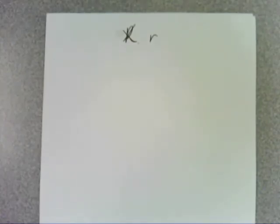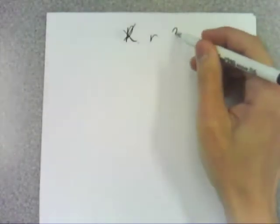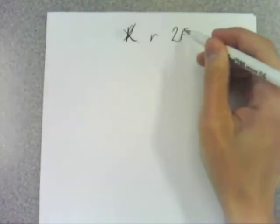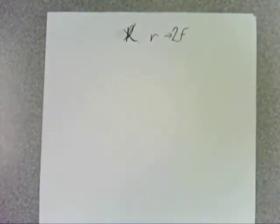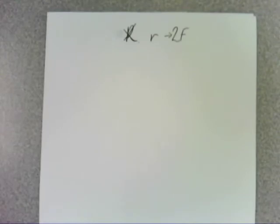So this is R, which is exercise 2f. Now it's got this fancy name called Pearson's product moment correlation coefficient. And you don't even get told how to calculate it until the next exercise in 2g.